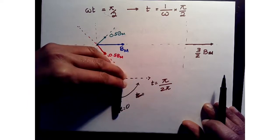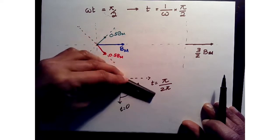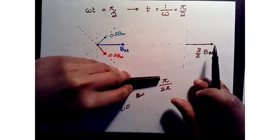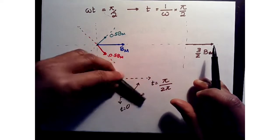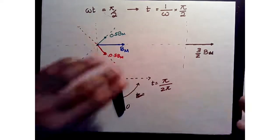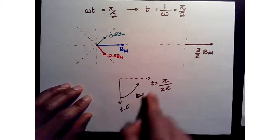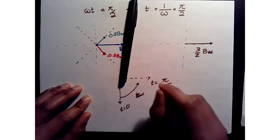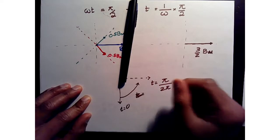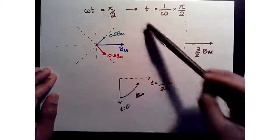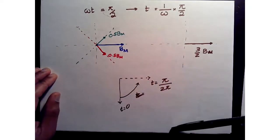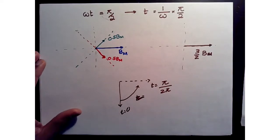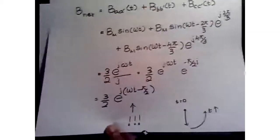So at t = 0 the net vector was pointing down, and over time the amplitude didn't change — it rotated to a new location. With the configuration of the windings and the balanced currents, as time passes this results in a flux density that rotates at a certain frequency. At ωt = π it will point upward, at ωt = 3π/2 it will point in the opposite direction. So the net flux vector goes round and round as time increases.